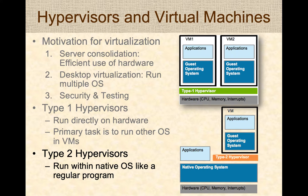A Type 2 hypervisor is just like a normal program or application that runs on any other desktop operating system. Type 2 hypervisors can run on Mac, Windows, or Linux, and their job is to create a virtual machine in which guest operating systems can run.